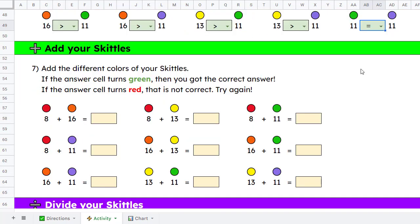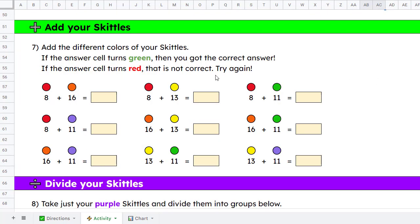All right, let's move on down to our next section, which is adding our Skittles. So in this case, we have paired up some different colors. And the job of the student is to add the quantities of those colors together. Once again, they can do it with the actual Skittles in front of them, or they can just look at the numbers to do that. As always, the cells are using conditional formatting. So if I were to type in the incorrect number, it will turn red. If I type in the correct number, it will turn green. And so we'll go through and fill in the rest of these real quick. All right, there we go. Got them all filled in.